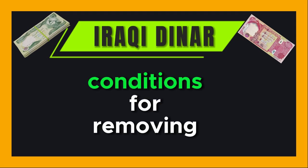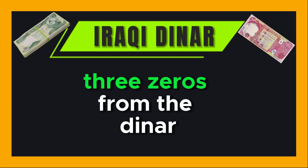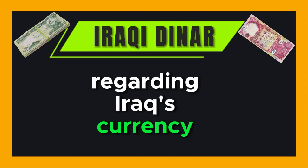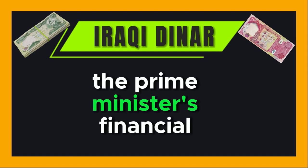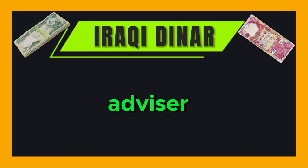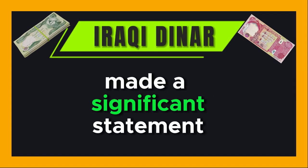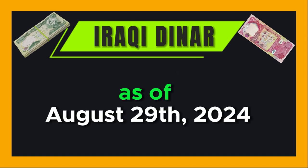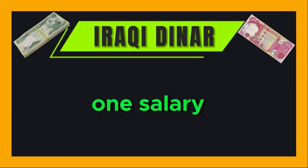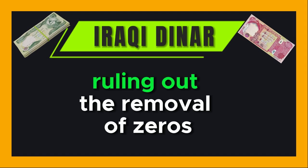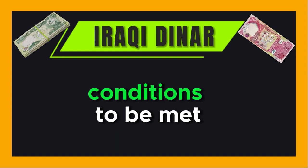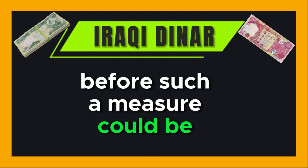Iraq's Currency Reform: Conditions for Removing Three Zeros from the Dinar. In the midst of ongoing discussions regarding Iraq's currency reform, the Prime Minister's financial advisor, Mazar Mohamed Saleh, has made a significant statement about the prospects of removing three zeros from the Iraqi currency as of August 29, 2024. Saleh emphasised that the government is currently ruling out the removal of zeros at this juncture, citing the need for two primary conditions to be met before such a measure could be considered.